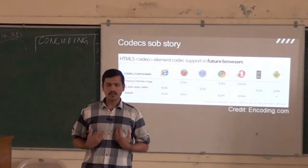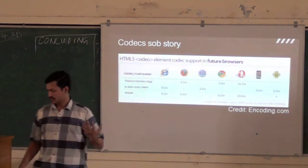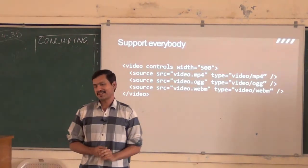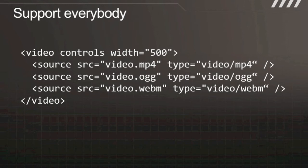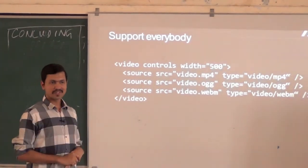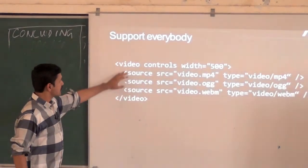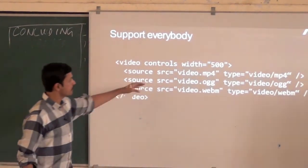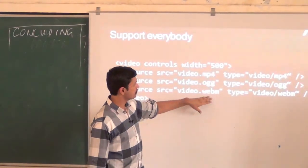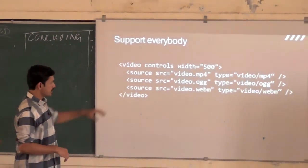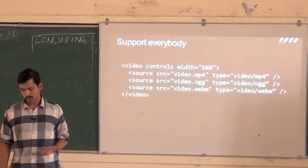So all these browser vendors are having a fight. What do we do so that our videos work across different devices? We support everybody — that's what we do anyway, day in day out. Fortunately the W3C spec had the vision to provide this capability. If you have a video tag, you can specify the source multiple times — you provide a source child tag and the same video is specified as MP4, OGG, and WebM, which are basically H.264, OGG, and WebM codecs. The browser will simply pick whatever it understands.